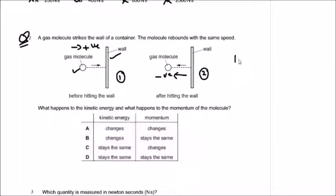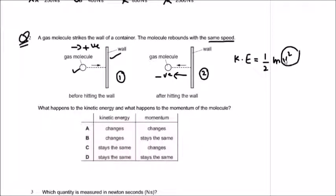For kinetic energy: KE equals half times mass times speed squared. Since the speed is given as the same before and after hitting the wall, and mass is constant, there is no change in kinetic energy. Options A and B show a change in kinetic energy, so they cannot be selected. Options C and D both show kinetic energy remaining the same.